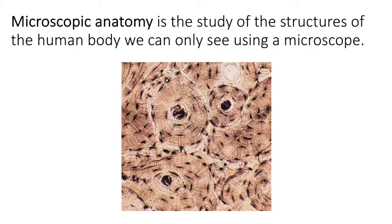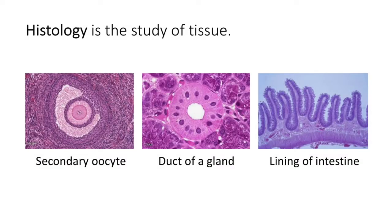It is very interesting to study tissue under the microscope. Another very important term is histology — the study of tissue. Tissue is a very important chapter we'll cover early in the semester, because the rest of the semester requires us to be comfortable talking about tissue. For example, when we discuss the digestive system, we'll refer to simple columnar epithelial tissue, and when we study the nervous system, we'll talk about neurons and glial cells.